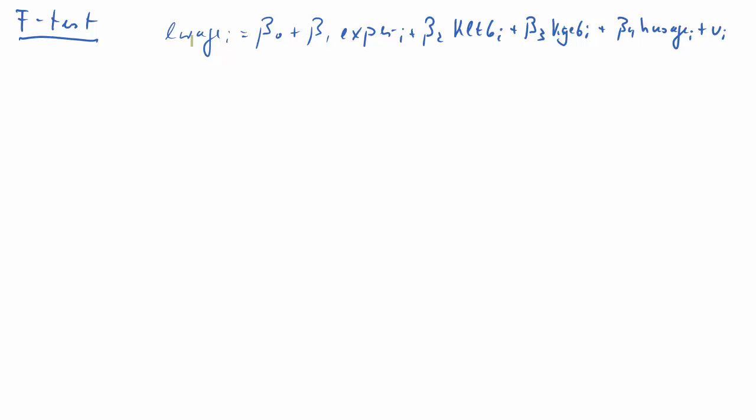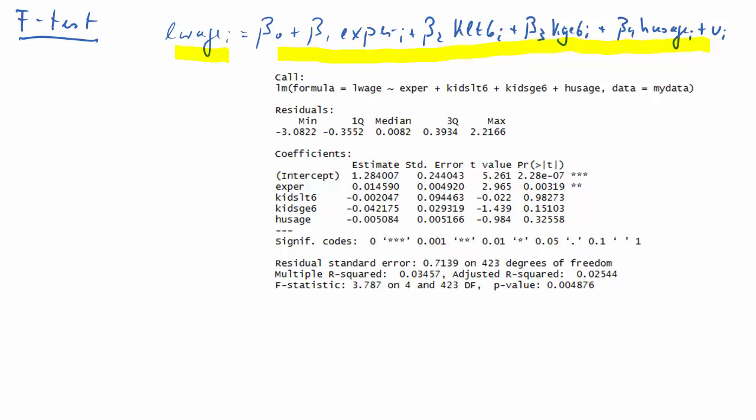Let's start thinking about this model. We have log-wage as a dependent variable, that is for females, and work-experience as one of the explanatory variables. KLT6 is kids younger than 6, KGE6 is kids older than 6, and HUSH is the age of the husband.